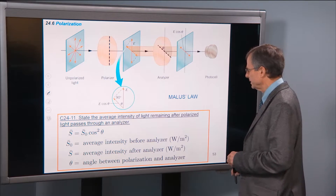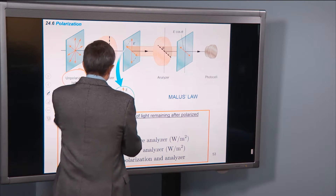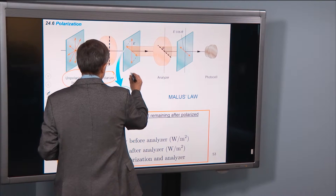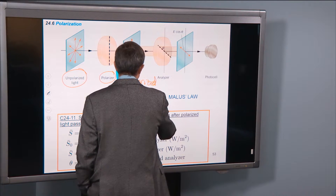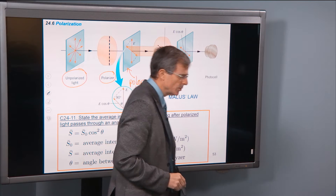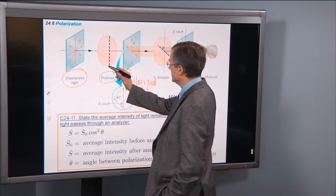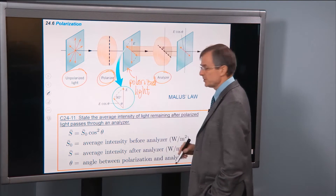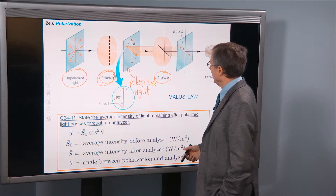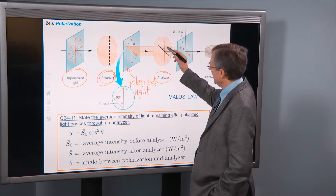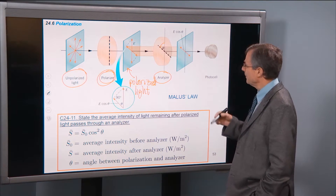Then Malus's Law — this is a little bit more involved. Start with unpolarized light again, pass it through a polarizer, and we get polarized light. Now we're going to pass it through another polarizer. It's the same as the first polarizer but just turned at an angle, and it's called an analyzer. This analyzer is at an angle θ with respect to the original polarization direction. How much of that light makes it through?